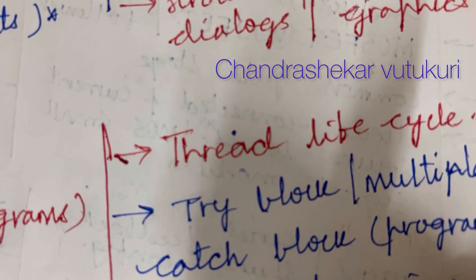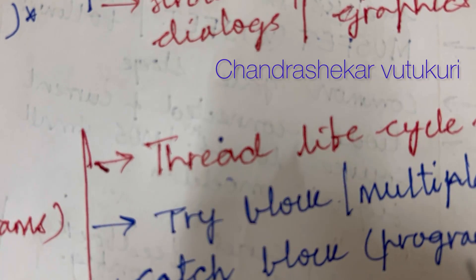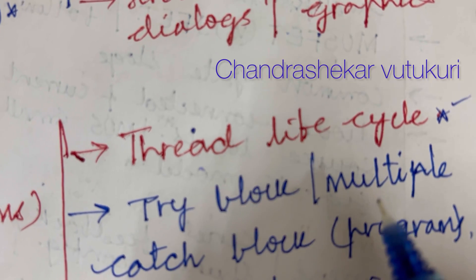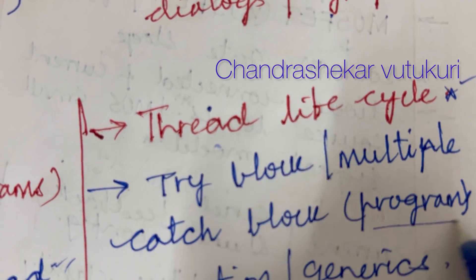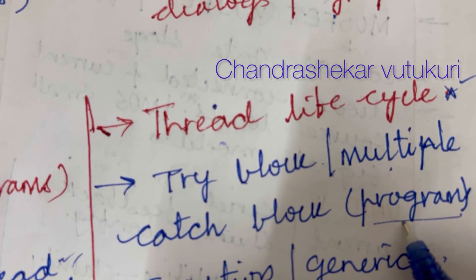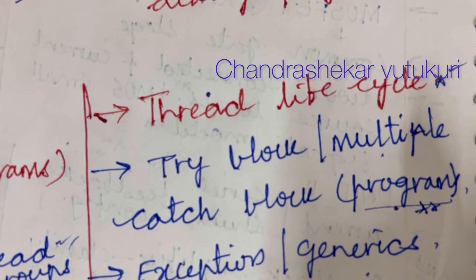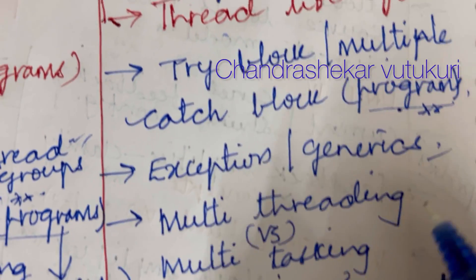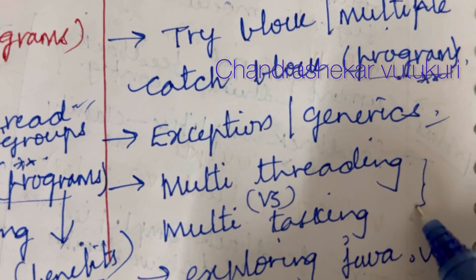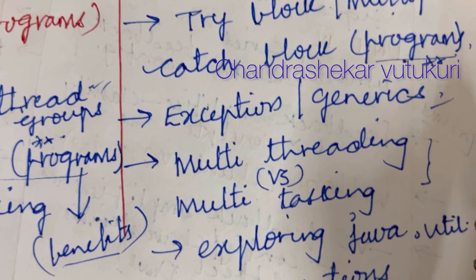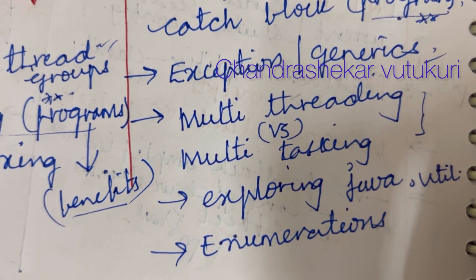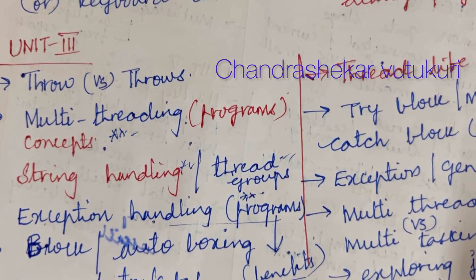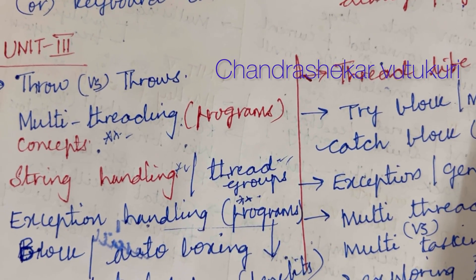Do not put a backlog — it will be troublesome for you in the coming semester examinations. Thread life cycle is set as the topmost question. Try block and multiple catch block programs are set as topmost questions. Custom exceptions as well as generics are short questions. Multi-threading versus multi-tasking is also set as a topmost question. Exploring java.util and enumeration are set as the topmost and definite questions under unit 3.